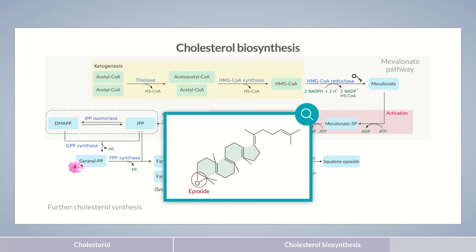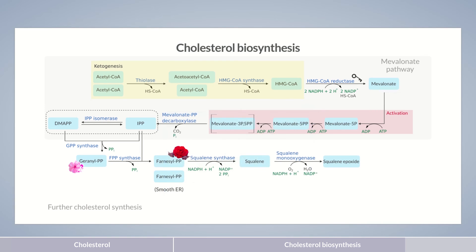An epoxide is a three-atom ring which forms when an oxygen atom incorporates into a double bond. The epoxy group here is activated by protonation, initiating a cascade reaction. In this reaction, the double bonds in the molecule fold over, consequently leading to the formation of a sterane skeleton. The resulting product is lanosterol, with the reaction catalyzed by lanosterol synthase. Afterward, a further eight reactions follow in which only the functional groups on the sterane skeleton are converted to form cholesterol.